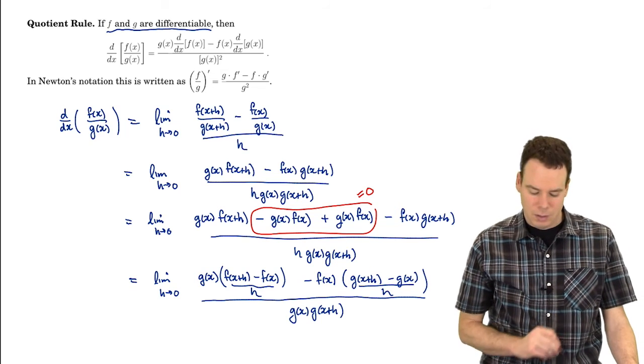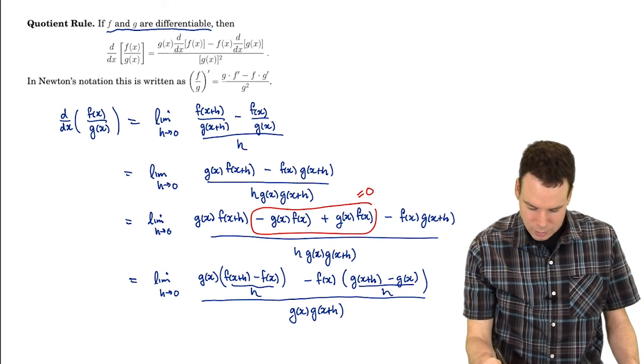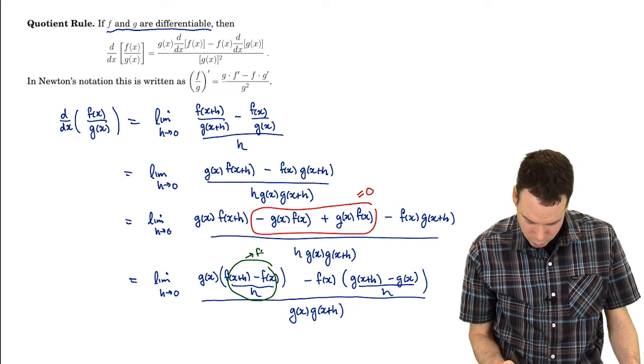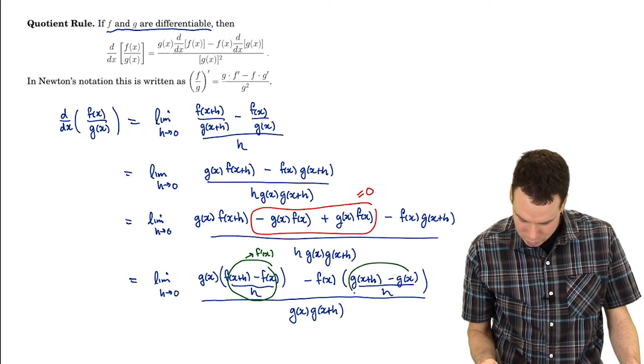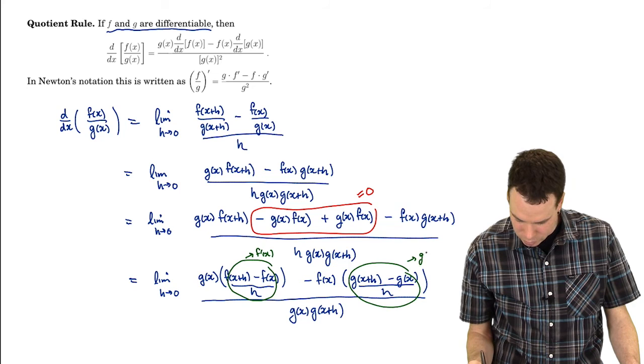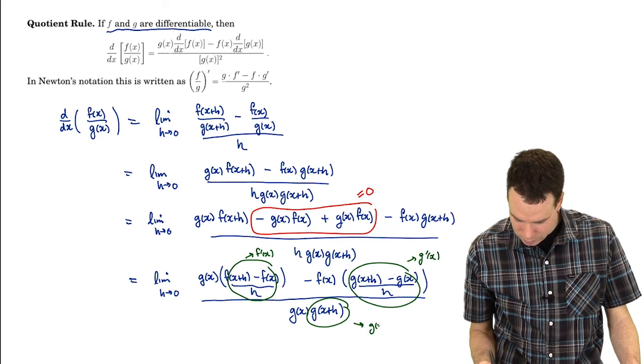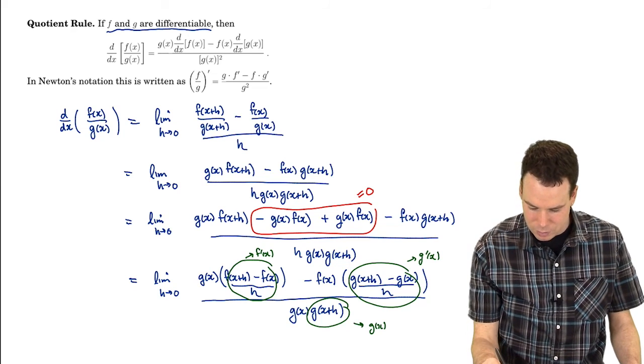And now we're done. Because as h goes to zero, this expression goes to f prime of x, this expression goes to g prime of x, and this thing here goes to g of x multiplied with the g of x that's already there.